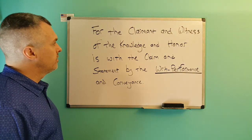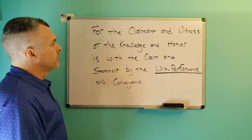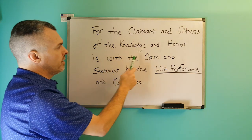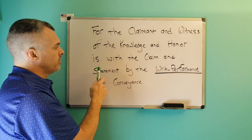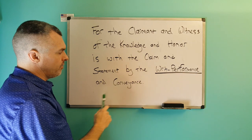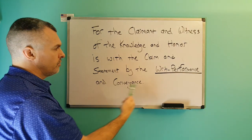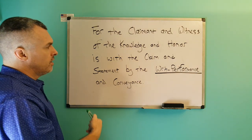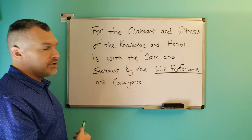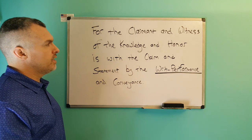Here we have a correct sentence structure claim. For the claimant and witness of the knowledge and honor is with the claim and statement by the writ performance and conveyance. Backwards: for the writ performance and conveyance of the claim and statement is with the knowledge and honor by the claimant and witness.